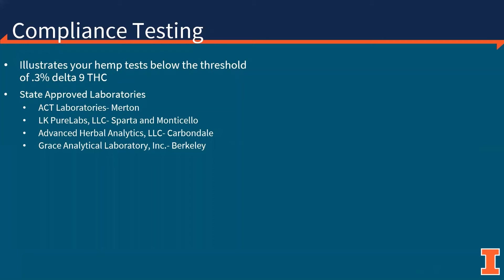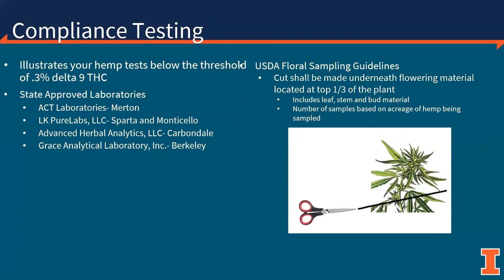I would now like to take a few minutes to talk about compliance testing. Certificates of analysis are issued and provide proof that your hemp tests below the threshold of 0.3 percent THC in the state of Illinois. The four state-approved laboratories are listed on this slide. You are allowed to send samples out of state for analysis, but keep in mind that sample collection, preparation, and analytical method may be different from state to state and lab to lab. Growers and processors will need to know the ins and outs of the rules and regulations before getting involved in hemp production, and can find all of this information via the Illinois Department of Agriculture website.